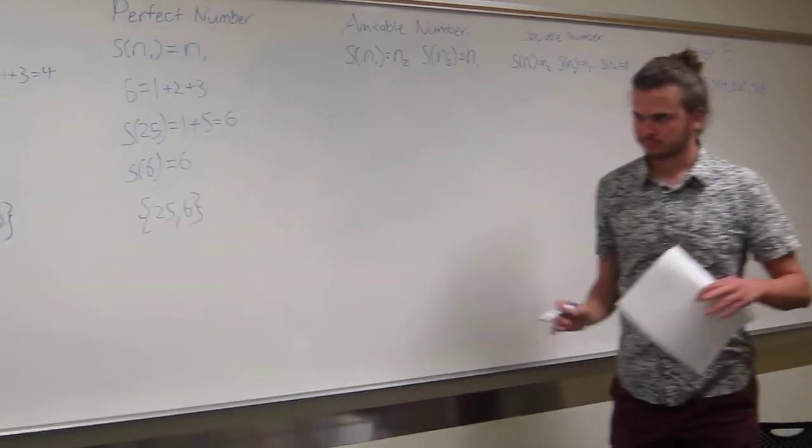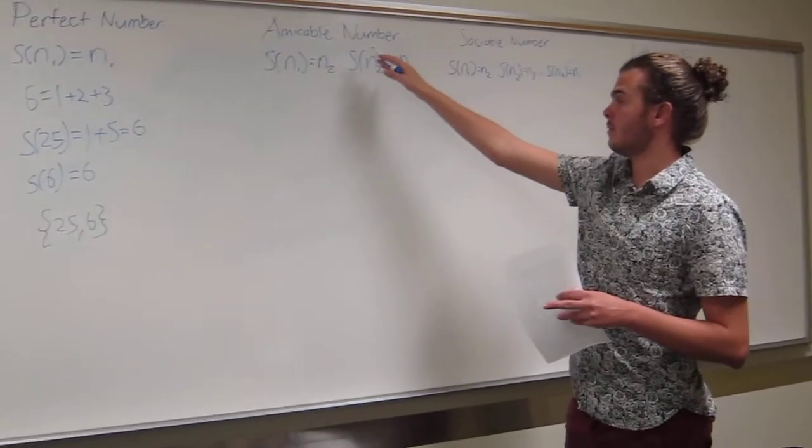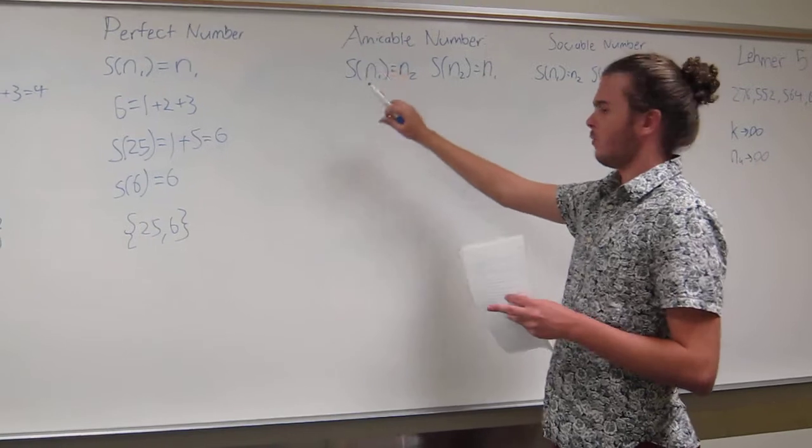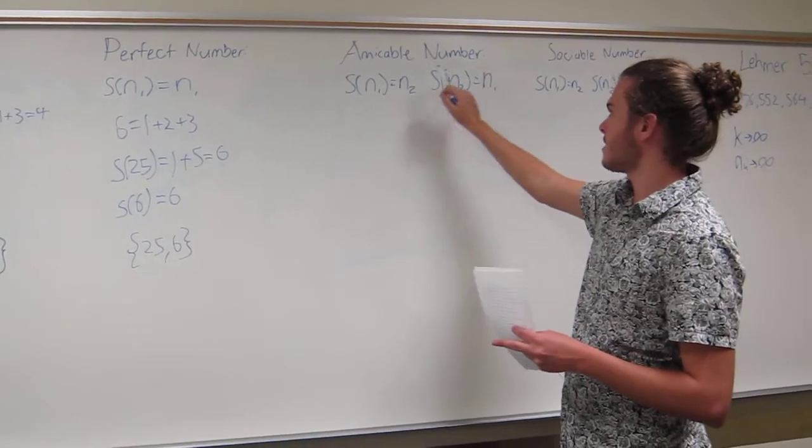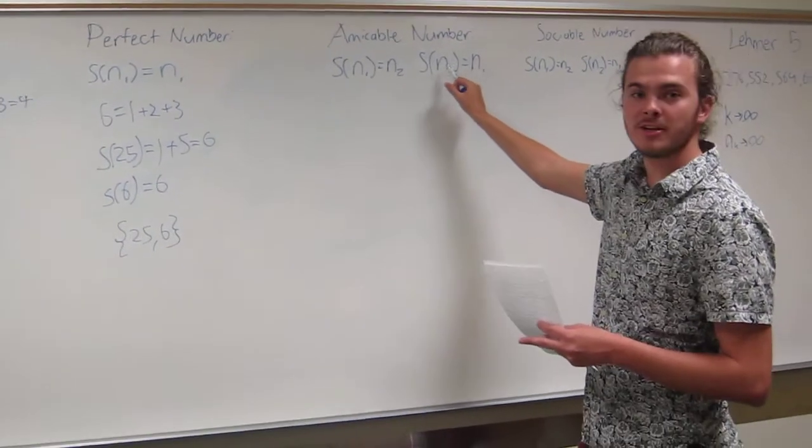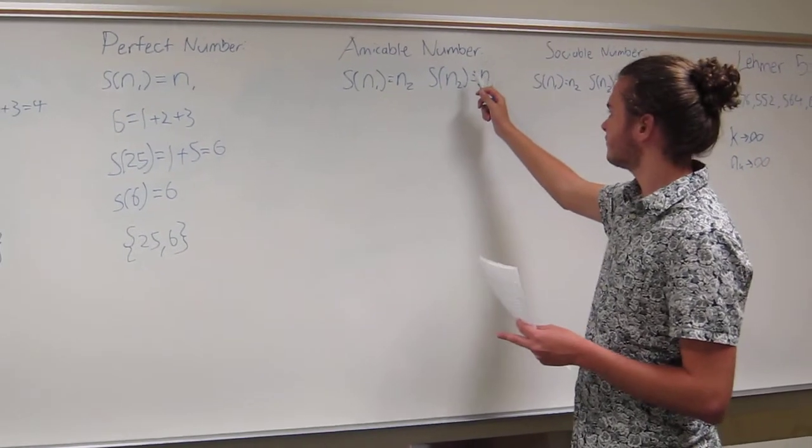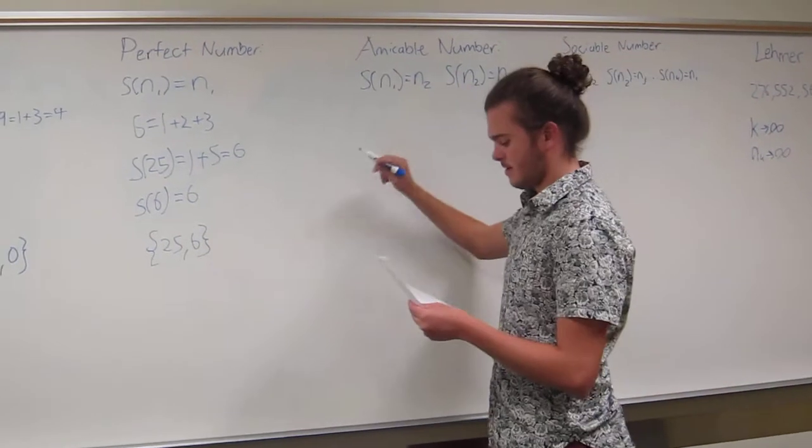Moving forward, amicable numbers. An amicable number is any number where the sum of the proper divisors of that number is equal to another integer, but the sum of the proper divisors of that second integer is equal to the first integer. Interesting. Let's provide an example.